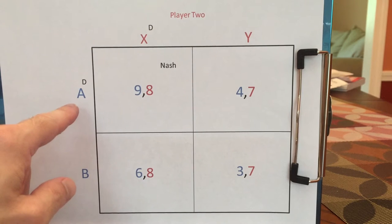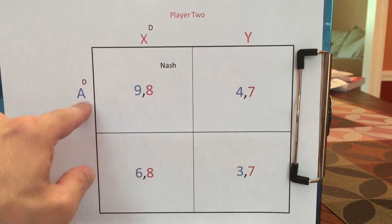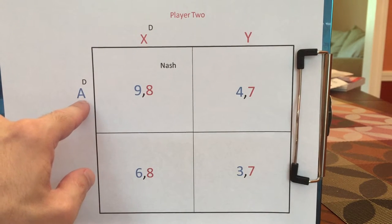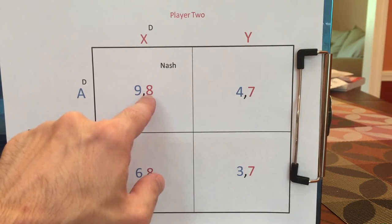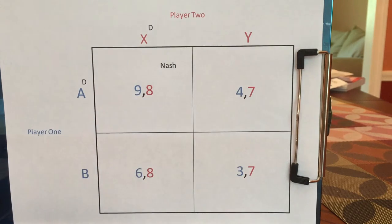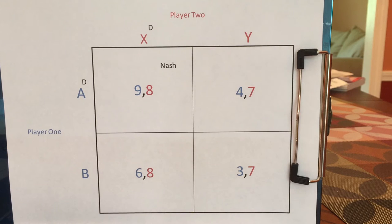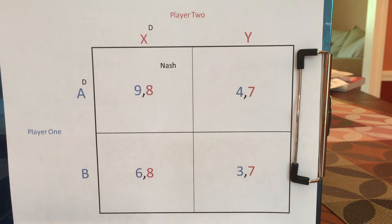Player two, similarly, doesn't regret picking X when they find out that player one picked A, because given that player one picked A, player two gets eight from X but would have only gotten seven from Y. So the key with the Nash Equilibrium is that when you see what the other person has done, you don't regret your outcome.